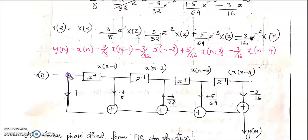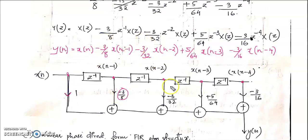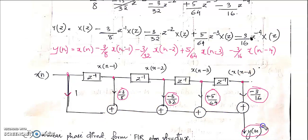X(N) is the input at this point. Then X(N−1) with one unit delay, X(N−2) with one more unit delay, X(N−3), and X(N−4). We need only 4 delay elements. The filter coefficients are: 1, −3/8, −3/32, +5/64, and −3/16. We sum up all these terms to get the output Y(N). This is the direct form realization of the FIR filter.